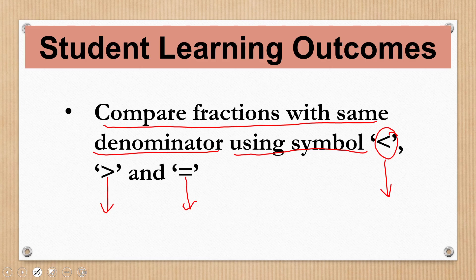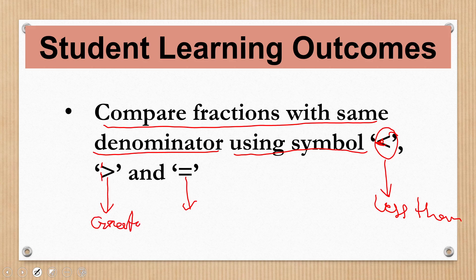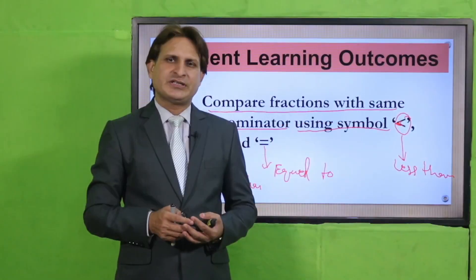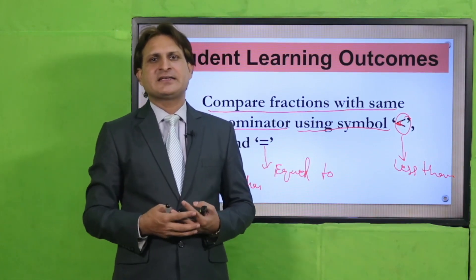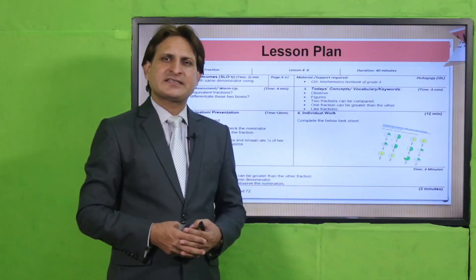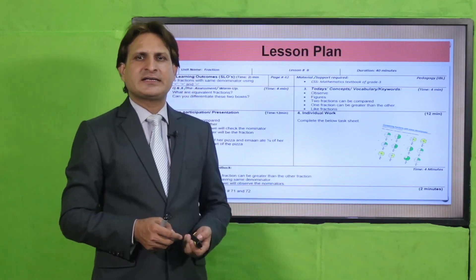یہ جو symbols ہیں یہ ہم لوگ previous lessons میں بھی use کرتے آئے ہیں. جہاں پر mouse جو ہے وہ close ہوگا اس side کو ہم لوگ less than کہتے ہیں، اور جس side کی طرف سے یہ open ہوگا اسے greater than کہتے ہیں، اور یہ دونوں lines equal to کے لیے use کی جاتی ہیں. Teachers, lesson plans description box میں سے download کر سکتی ہیں.